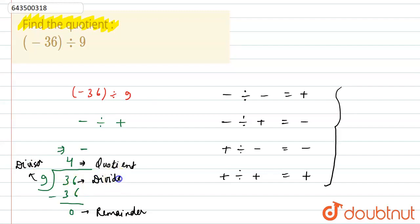So if divisor or dividend, any one of the following is negative, then the quotient will also be negative. If both of them are positive or both of them are negative, then quotient will be positive.